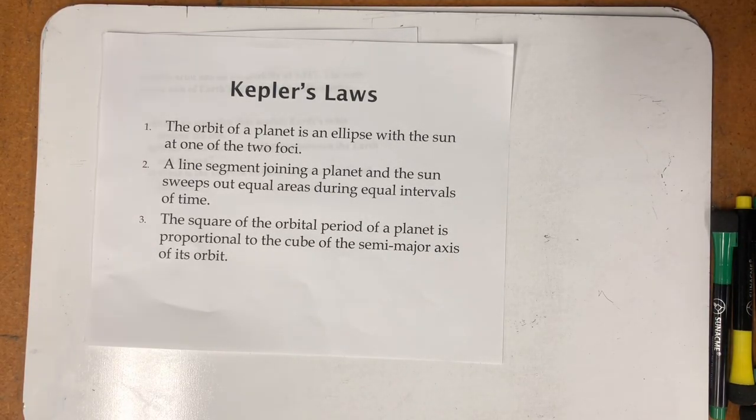One interesting application of the ellipse are planetary orbits, or the orbit of a moon around the planet, or the orbit of a space-faring vessel around a moon, or a planet, or a sun, or anything else.